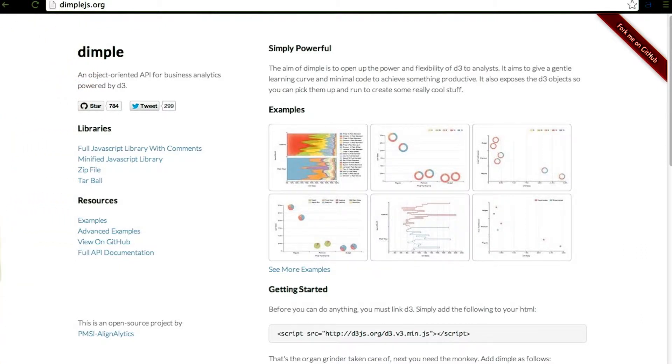As I mentioned, Dimple is a library built atop of D3 that allows us to work at the abstraction level of a chart, rather than lower level abstractions like visual encodings such as shape, scale, and positioning.